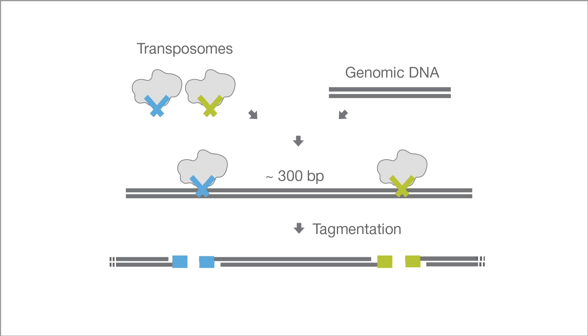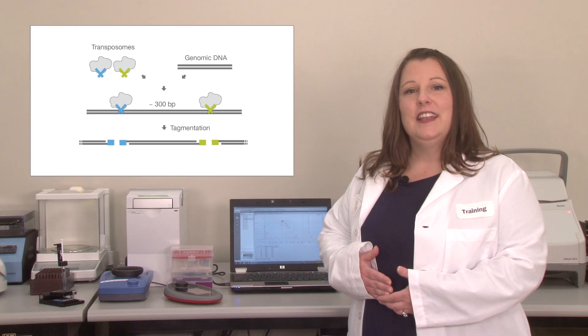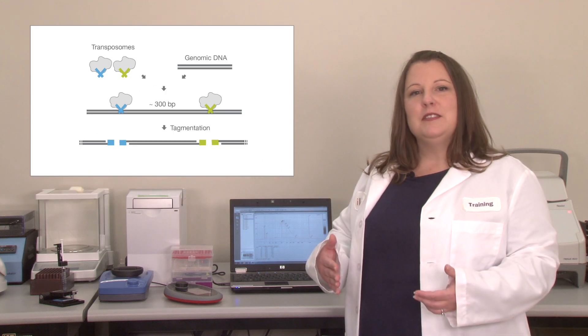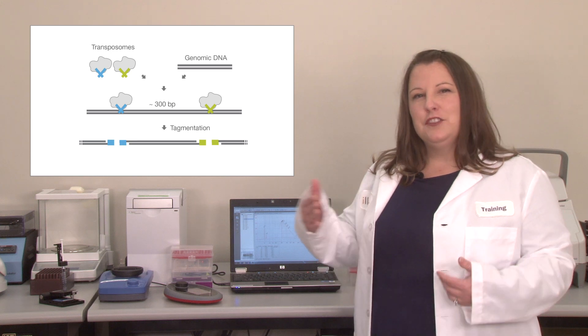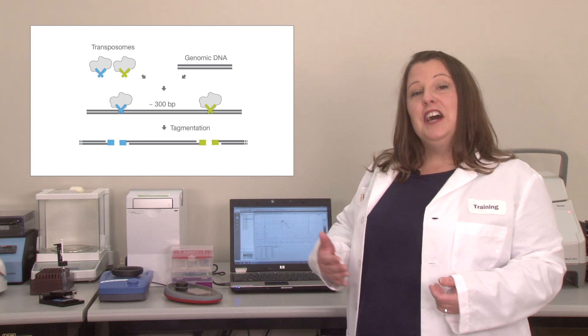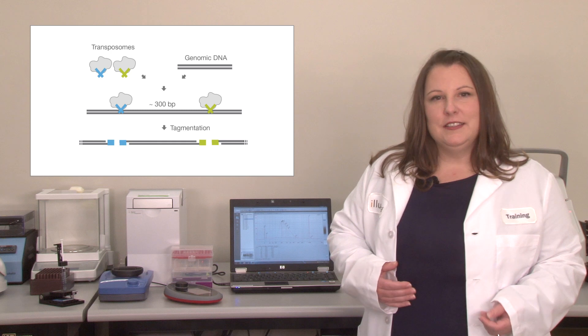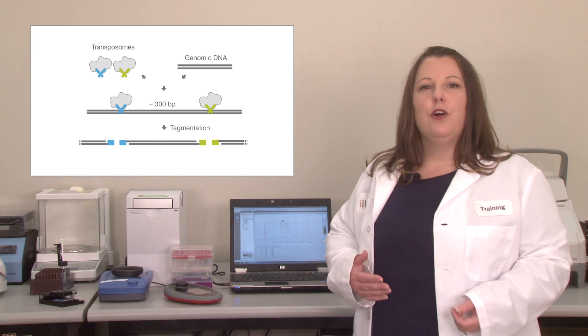The tagmentation process is an endpoint reaction. The transposon cleaves once and it is done. The resulting fragment sizes are highly dependent on the mass of the input material, so adding too much input DNA can lead to under-tagmentation. Likewise, too little DNA can lead to over-tagmentation.